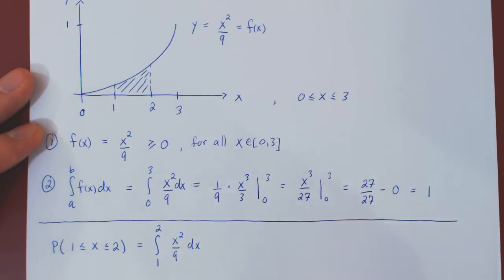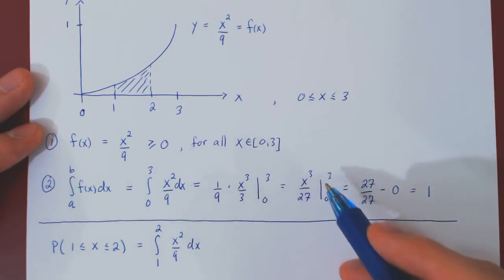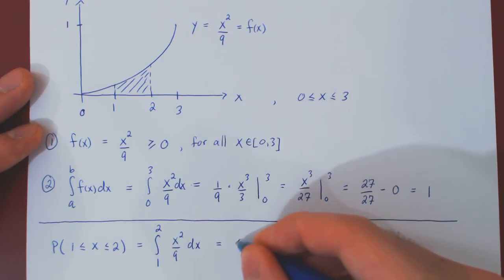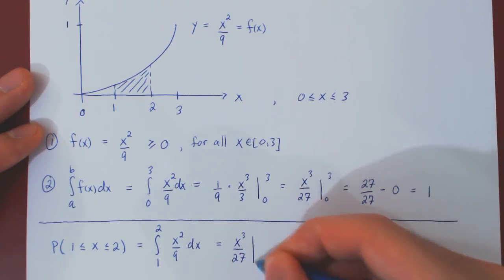Well, we already have found the antiderivative before. It's the same function, x squared over 9. So the antiderivative is x cubed over 27. And we must evaluate this from 1 to 2.